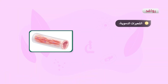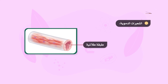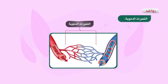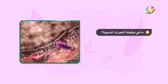النوع الثالث من الأوعية الدموية هو الشعيرات الدموية، وهي أوعية دموية دقيقة جداً يقل قطرها عن 10 مايكرون. يتكون جدارها من طبقة واحدة من الخلايا تسمى طبقة طلائية محاطة بغشاء قاعدي. تتوزع الشعيرات الدموية على شكل شبكة في أنسجة الجسم وتربط بين الشرينات والوريدات.